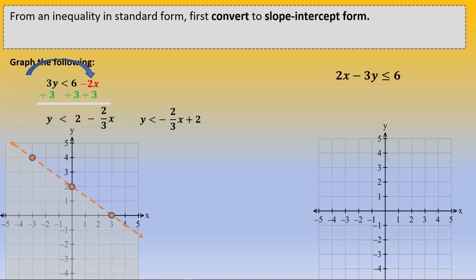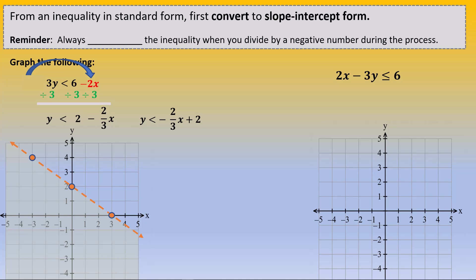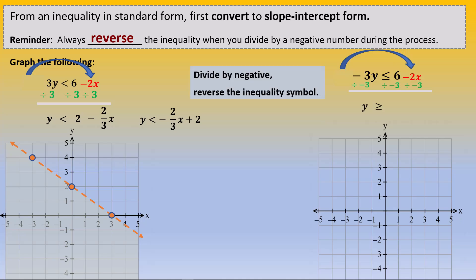Here is an equation 2x minus 3y less than or equal to 6. If you look carefully, the y term has a negative 3 as the coefficient, which means we're going to end up dividing by negative 3. This brings up the rule that you always reverse the inequality when you divide by a negative number during the process. We move the 2x over, and we end up with negative 3y less than or equal to 6 minus 2x. We divide all sides by negative 3, which means we reverse the inequality, and we get y greater than or equal to negative 2 plus 2 over 3x. We rearrange into slope-intercept form: y greater than or equal to 2 over 3x minus 2. We locate the point at negative 2, go up 2 and over 3 — even go backwards — and we draw a solid line because the greater than or equal to symbol contains equals, and we shade above the line because it's greater than.